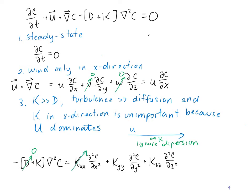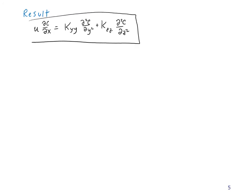We said kₓₓ is unimportant, so with these three assumptions, we've lost many terms from the advective diffusion equation. The result: u(∂C/∂x) = k_yy(∂²C/∂y²) + k_zz(∂²C/∂z²). All other terms are zero.